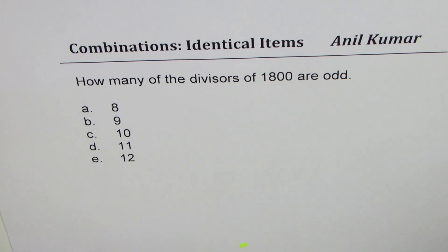The question here is: how many of the divisors of 1800 are odd? The five choices are 8, 9, 10, 11, 12.